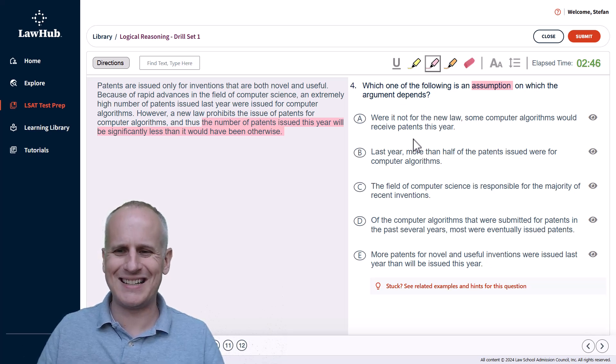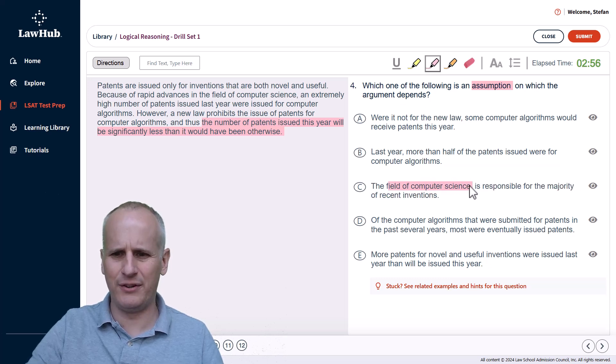The field of computer science is responsible for the majority of recent inventions. Well, we're talking about patents for computer algorithms, not the entire field of computer science. Furthermore, we don't really broach the idea of recent inventions at all in this argument, so I feel pretty confident for either of those reasons to eliminate choice C. Then we've got choice D, which says of the computer algorithms that were submitted for patents in the past several years. We're talking about last year versus this year - as soon as I see past several years, that's not going to be directly relevant, so we can eliminate that.